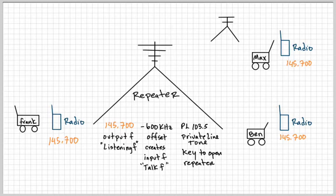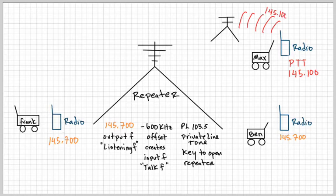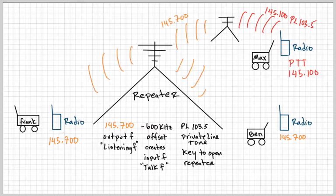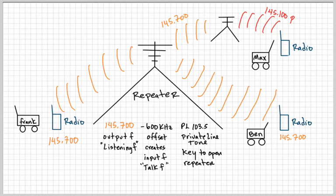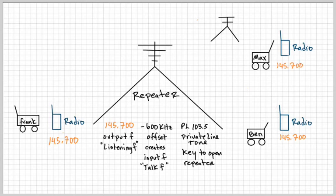If Max, who is in another state, wants to talk to Frank or Ben, he can press the PTT button. The radio is programmed so that it will have the proper input frequency or talk frequency based on the offset. That goes to the repeater. The repeater is listening for the proper tone and the proper frequency, then it transmits to the other repeaters. Frank and Ben can hear what Max wants to say. When Max is not pressing the PTT button, everybody's listening. That's the basic concept.